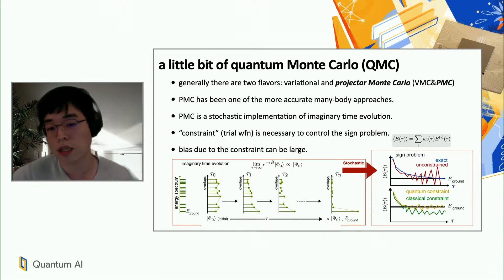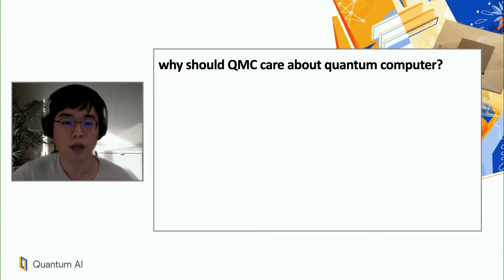So once we impose the constraints, depending on what constraints we put, we may or may not get good answers. So quantum constraint in yellow, this one is just a way to say if we have a good constraint, we actually approach the exact ground state energy at long enough time. And the green one, classical constraint, which is classically tractable but often quite bad, once you impose it as a constraint, then you may actually get significant bias as shown in this figure. This really leads us to an important question today, why should QMC care about quantum computers?